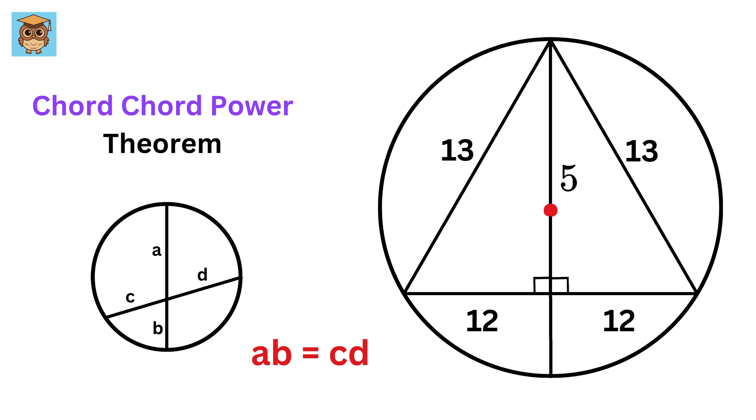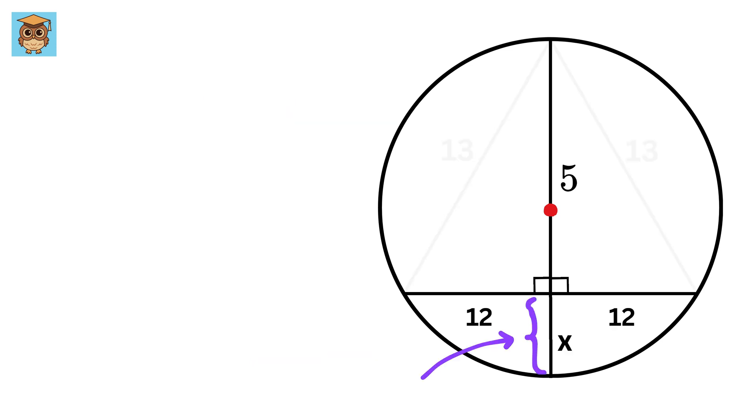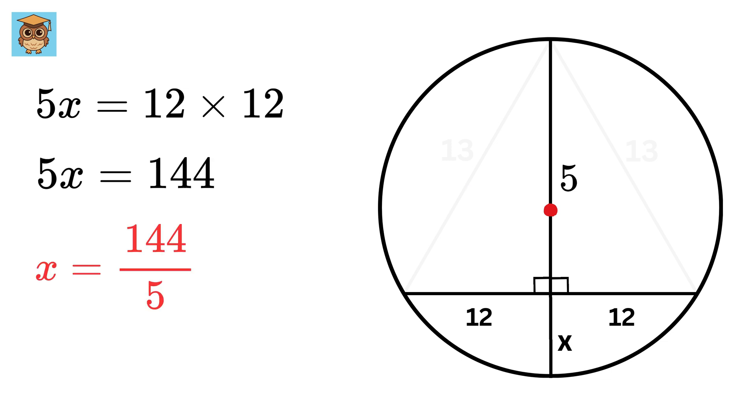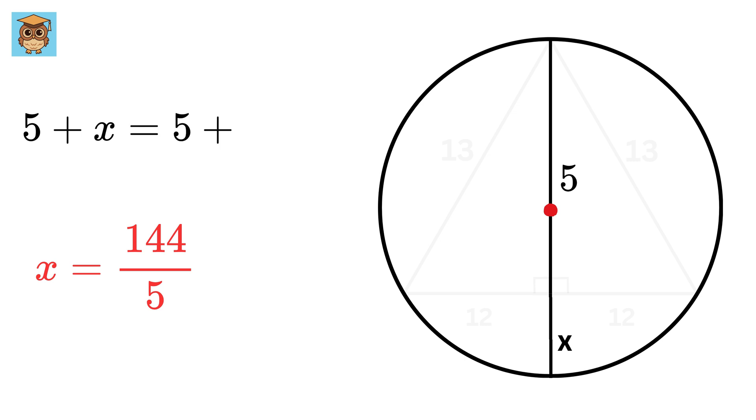If we label this as x, then we get 5 times x for this chord equals 12 times 12 for this chord, which equals 144. So we get x equals 144 upon 5.